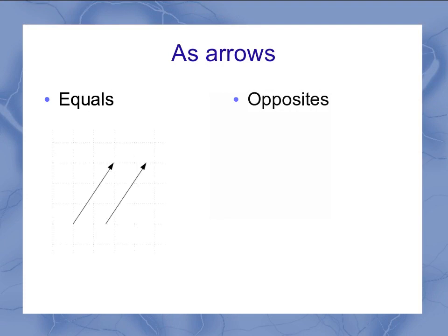Equal vectors are exactly the same length and point in the same direction in space. Opposite vectors are also the same length, but they're pointing in opposite directions to each other. You can imagine if I took these two equal vectors and laid them on top of each other, they would exactly overlap. If I took the opposite vectors and laid them on top of each other, they'd be exactly the same length, but one has a head on this side and the other has the head on the other side.